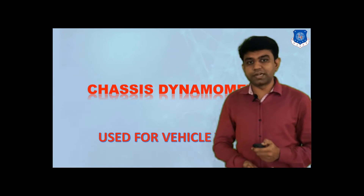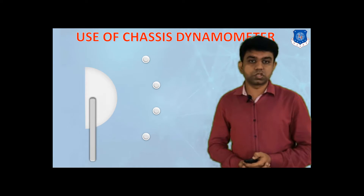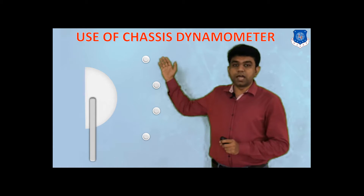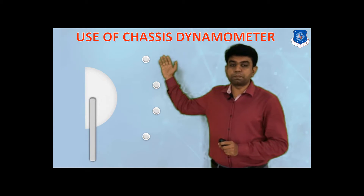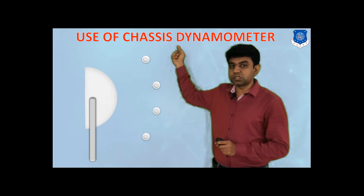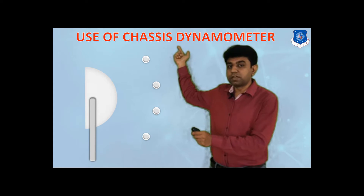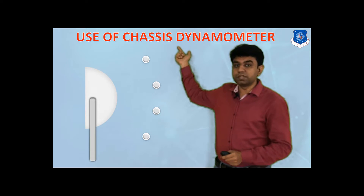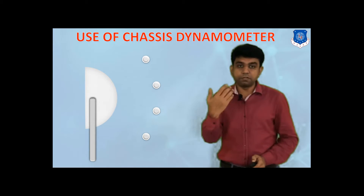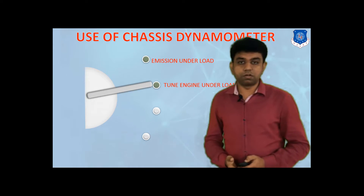Let us have an outlook at which different tests can happen with this chassis dynamometer. Normally, it is said that with the chassis dynamometer you can measure the power which is available at the wheels. From a normal dynamometer you can get brake power, that is the power available at the engine shaft. But whenever you want the power available at the wheels, you need to go for the chassis dynamometer. Apart from that wheel power, we can get a number of different results as well.